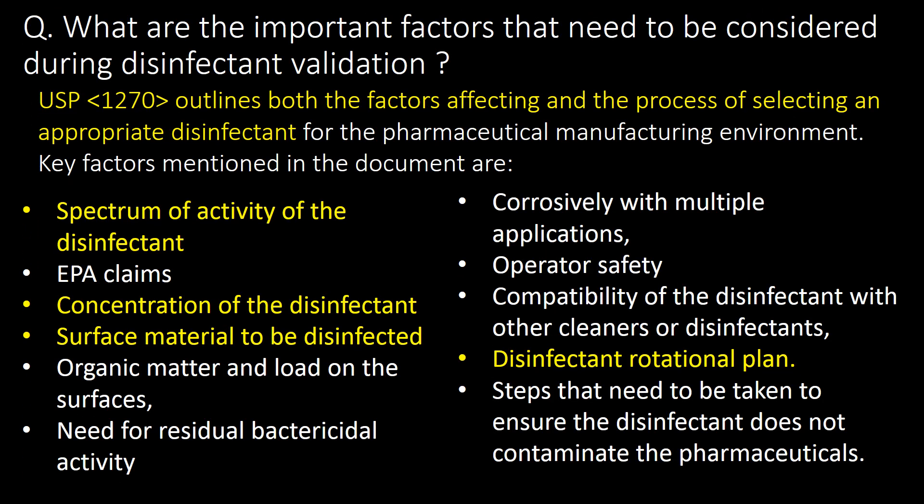What are the important factors that need to be considered during disinfectant validation? As per USP Chapter 1270, few important factors are: spectrum of activity of the disinfectant, concentration of the disinfectant, surface material to be disinfected, and disinfectant rotation plan.